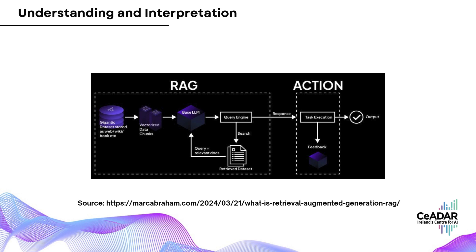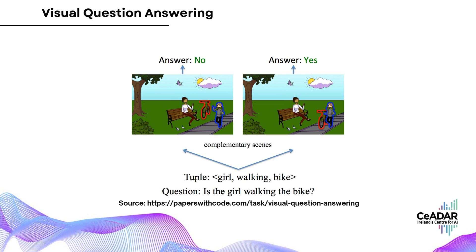Closely related is visual question answering. This is when you input an image and ask the model questions about it — for instance, showing an image of a street scene and asking 'How many cars are there?' The model looks at the visual content, identifies the relevant elements, and provides a numerical answer. Visual question answering can be applied in security and surveillance — asking 'How many people are in this area?' or 'Is there an object left unattended?' — and also in customer support, helping technicians diagnose issues based on photos of machinery sent in by customers.